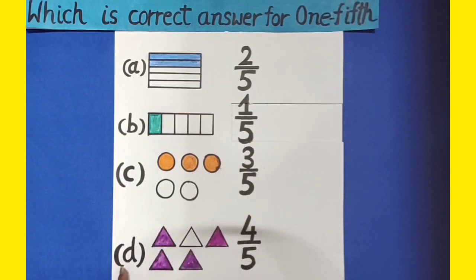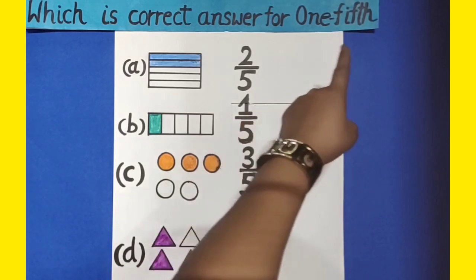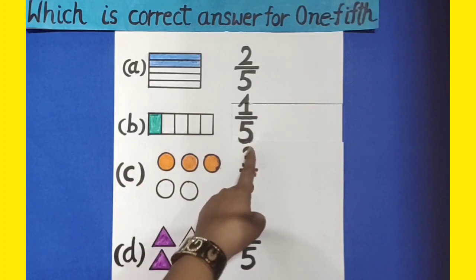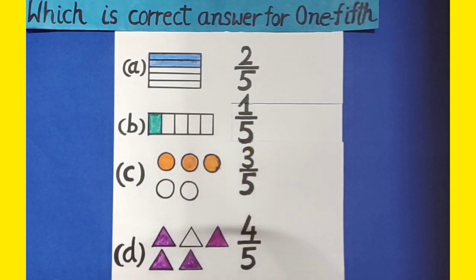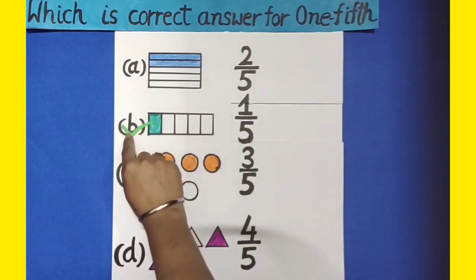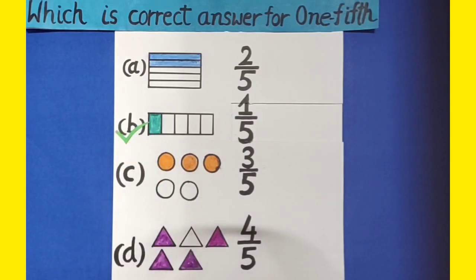Now in part D, out of 5 equal triangles, 4 are colourful. So its fraction form is 4 by 5. So 1 fifth can be represented as 1 by 5. Option B is the correct answer. Let's tick mark this.